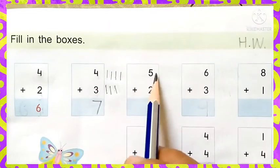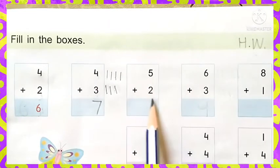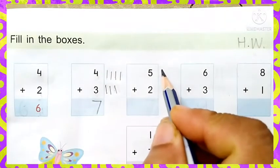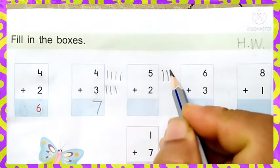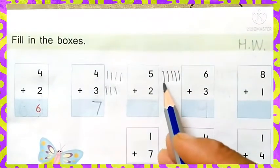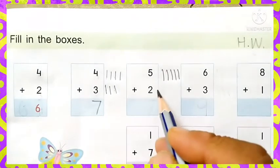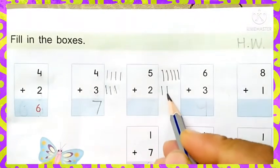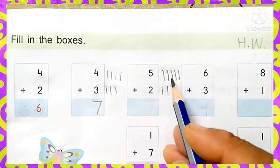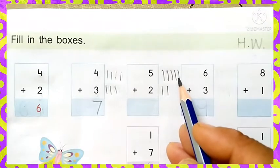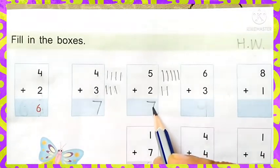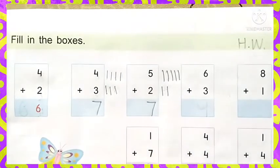Next we will add five plus two. First we have to draw five lines: one, two, three, four, five. And we will add in five, two — so draw two lines: one, two. We will count together all the lines: one, two, three, four, five, six, seven. So the answer is seven, and we will write the answer in this box.